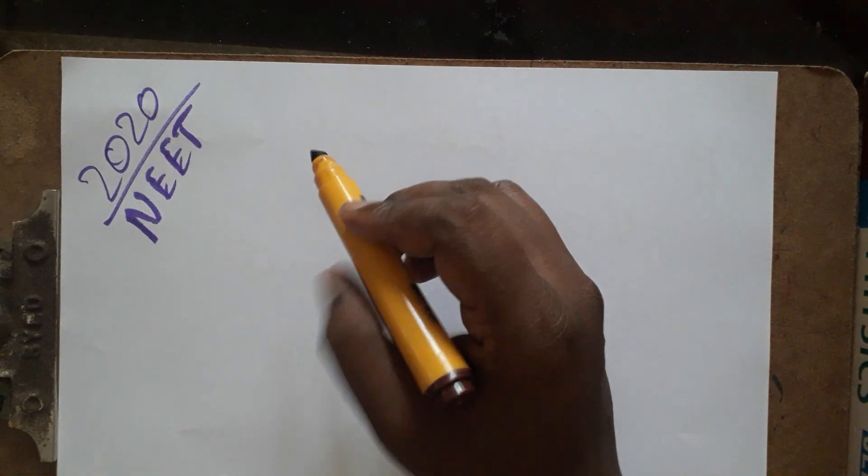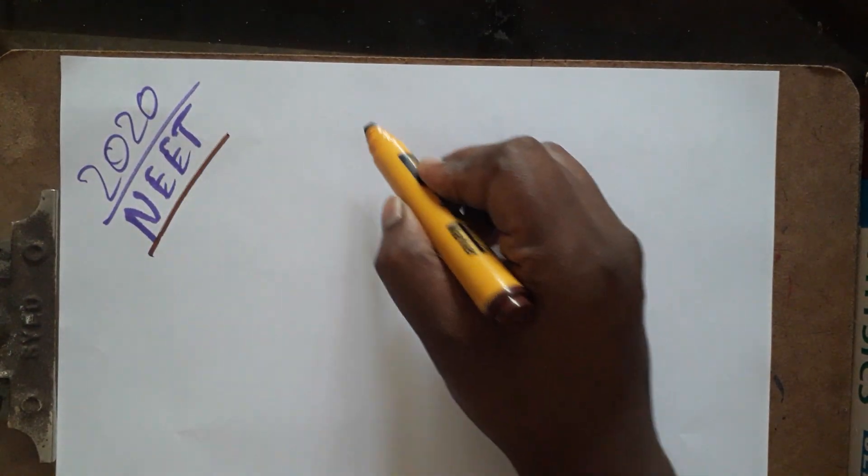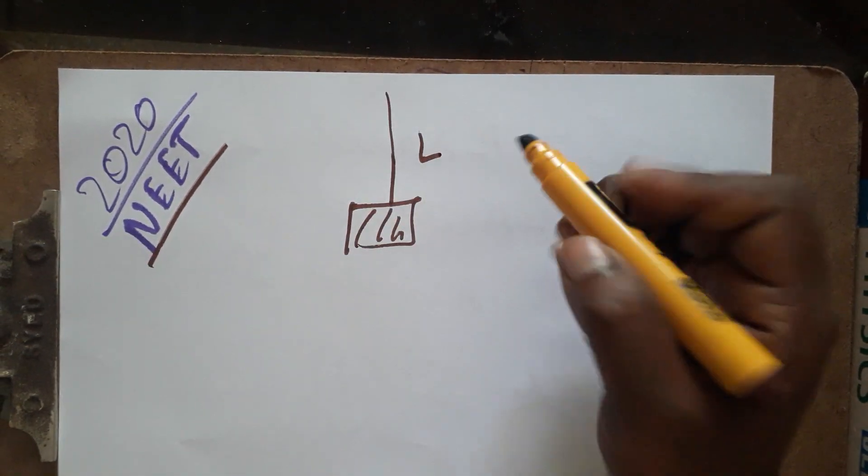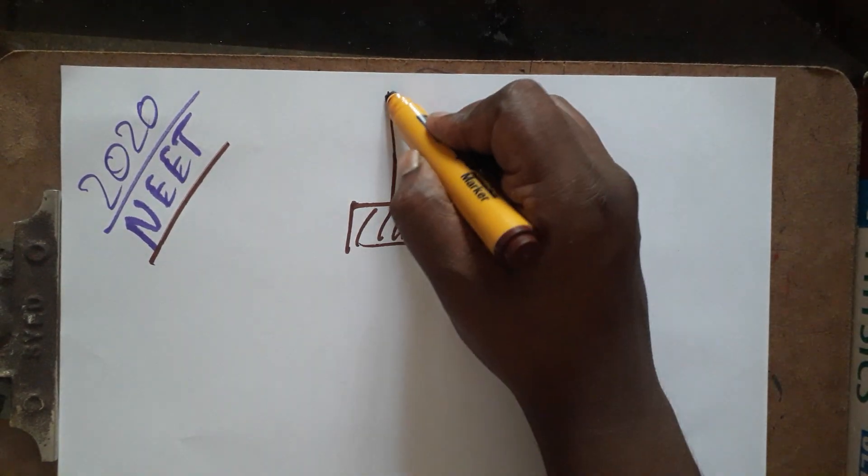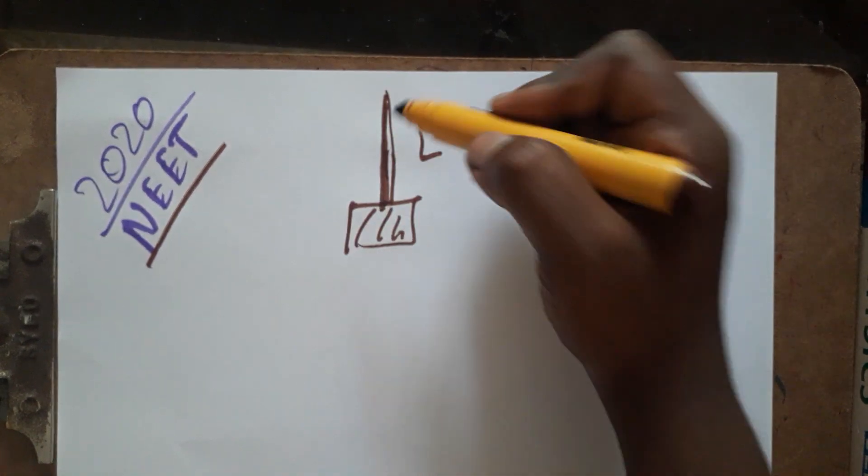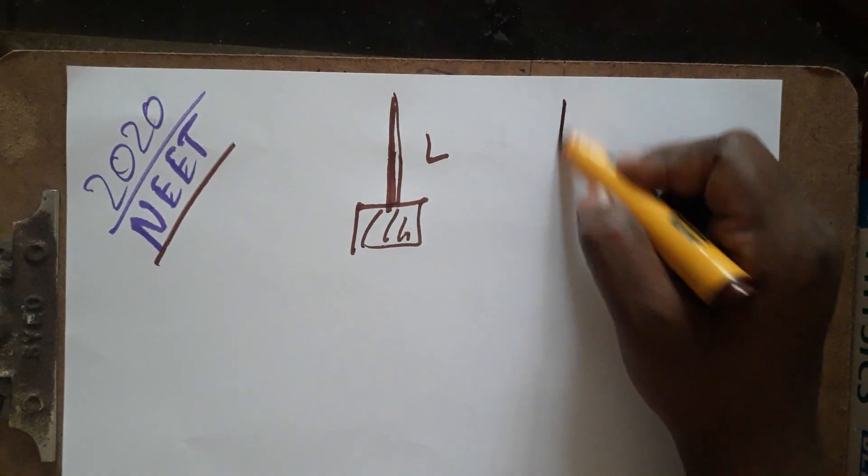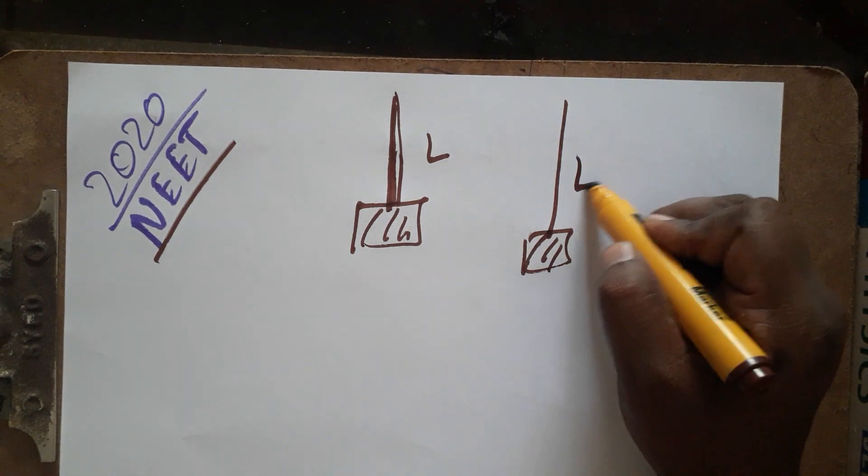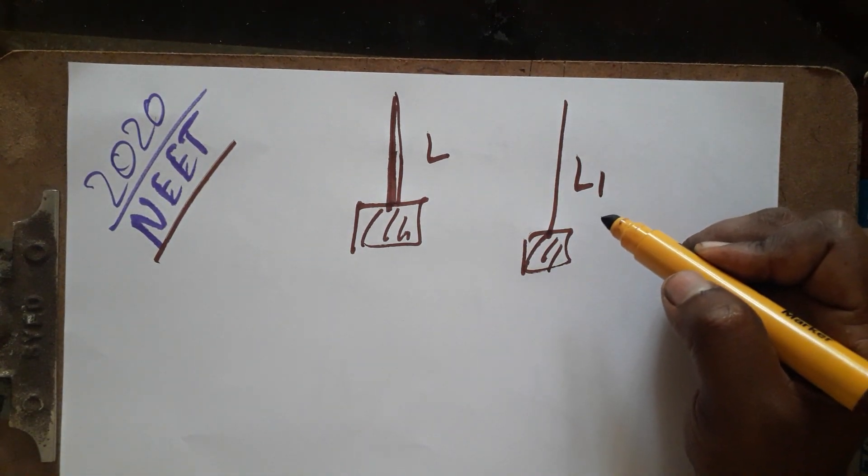They are telling we have some load on a wire of length L. After we apply the load, the length is going to extend - that is the elasticity nature. The new length is going to be L1. Now they asked what is the modulus of elasticity. They have given four different answers.